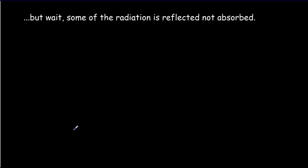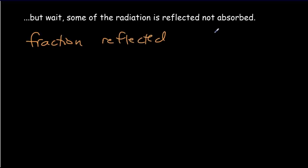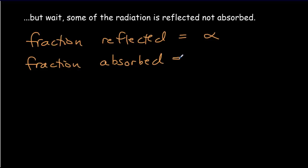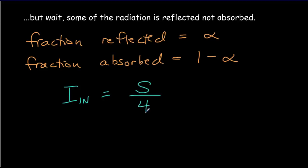We're not quite done, because it's only the radiation coming in that's absorbed that contributes to warming the Earth — any radiation that's reflected doesn't contribute. The fraction that's reflected is called the albedo, so what warms up the Earth is the fraction that is absorbed, which is one minus the albedo. So our input intensity is going to be the solar constant divided by four, multiplied by one minus the albedo — that's the fraction of radiation absorbed and not reflected by the Earth and its atmosphere.